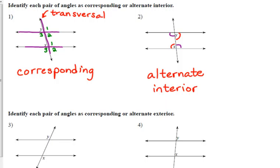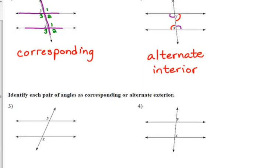We also have alternate exterior. We also have alternate exterior angles, and that's what the angles in example three are. Again, alternate, meaning they are on opposite sides of the transversal. Exterior means that they are on the outside of our parallels. So Y and X are alternate exterior.